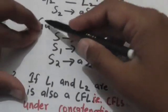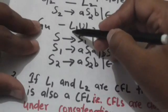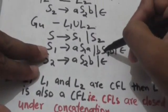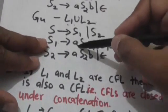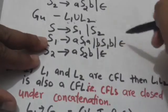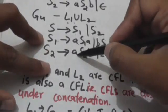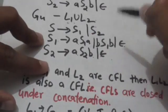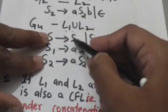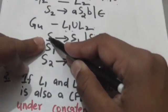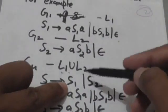Let GU be the grammar of L1 union L2. It will contain all productions of grammar G1 and G2: S1 derives A, S1 A; S1 derives B, S1 B; S1 derives empty string; S2 derives A, S2 B; S2 derives empty string. And it will also contain: S derives S1, S derives S2, where S is the start symbol of GU, S1 is the start symbol of G1, and S2 is the start symbol of G2.